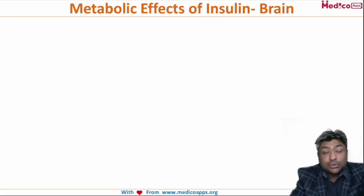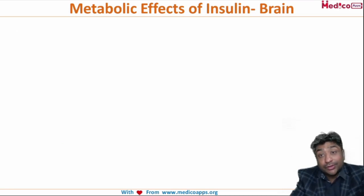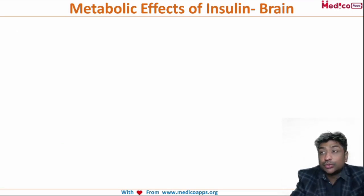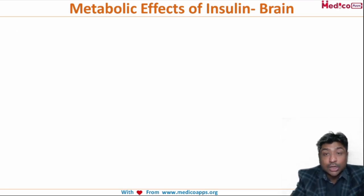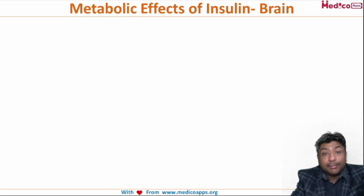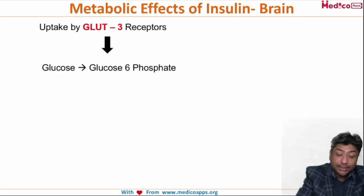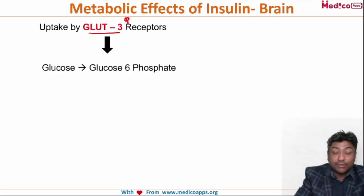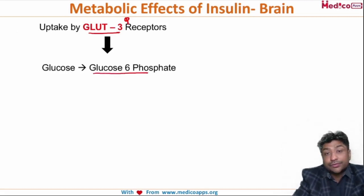Let's look at the metabolic effect of glucose and insulin on brain. In fact, the metabolic effects of insulin and glucose on brain, liver, and muscle are all separate questions. We know that in brain, the uptake of glucose happens by GLUT3 receptors, and once glucose is taken up it is converted into glucose-6-phosphate.